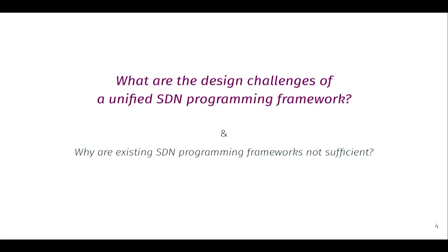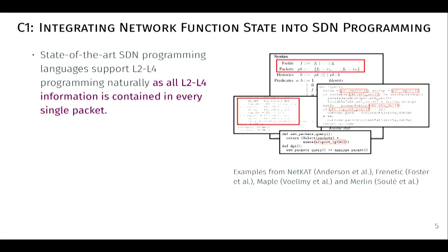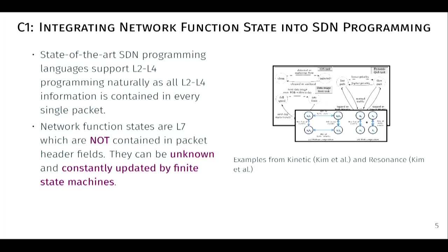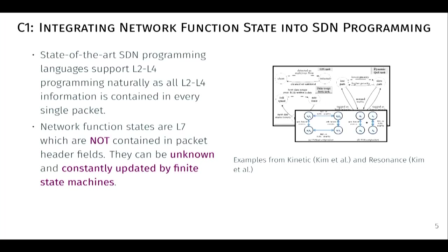State-of-the-art SDN programming languages support layer 2 to layer 4 programming very naturally because all that information is contained in every single packet. However, for network function states — layer 7 information not contained in packet header fields — such as the HTTP host information, you do not have that information until after the HTTP handshake is completed. These can be unknown information and are modeled as state machines that can be constantly updated. We need a simple abstraction to encode this layer 7 information into SDN programming. The second challenge is constructing consistent anchor-related routes.